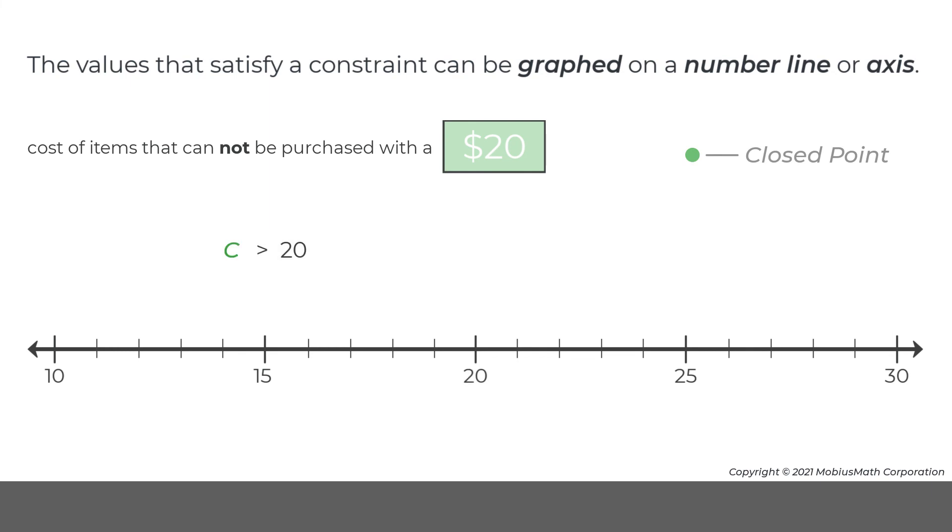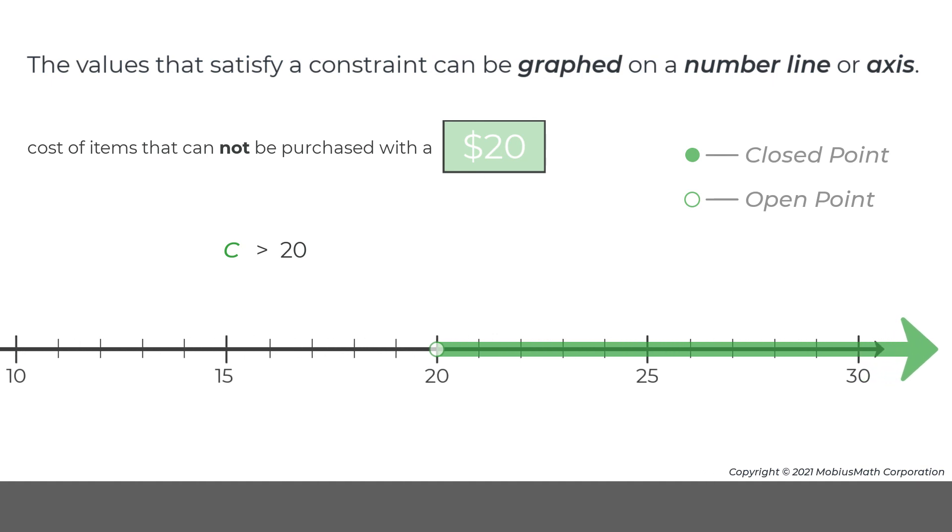So, when this new constraint is graphed, an open point is graphed for 20. Then, the values that satisfy this constraint can be represented by a shaded line with an arrow at the end. Note, the arrow indicates that values greater than 30 satisfy this constraint.